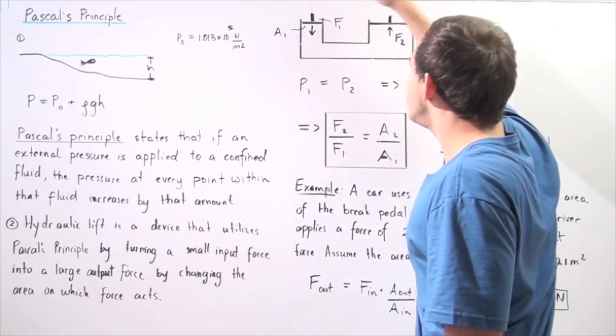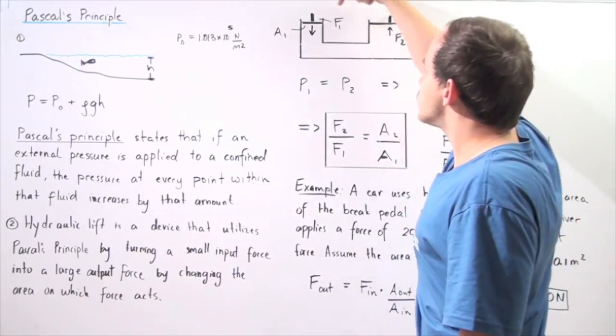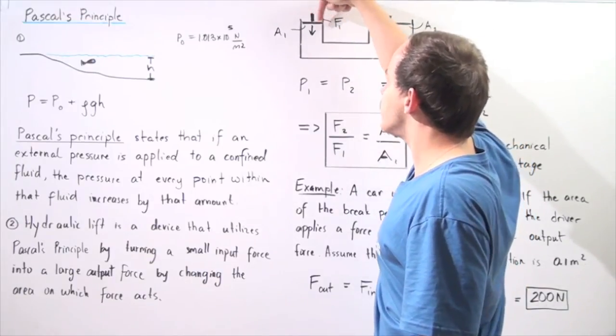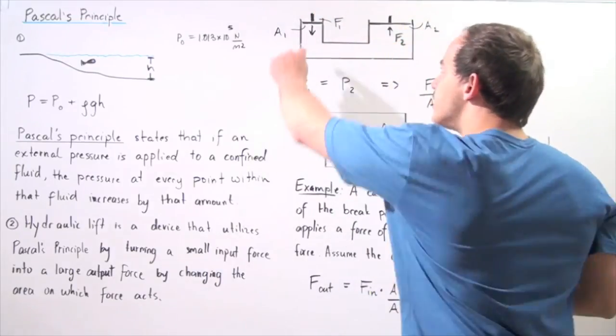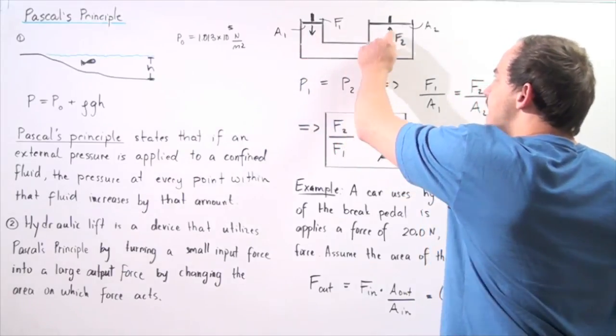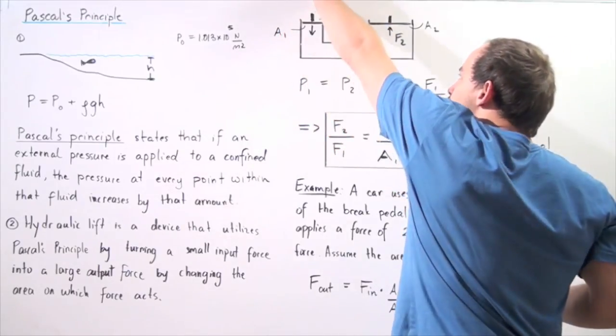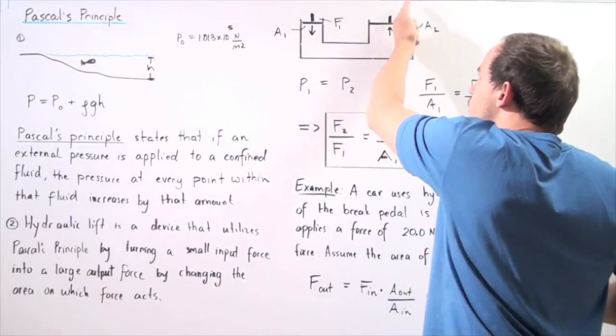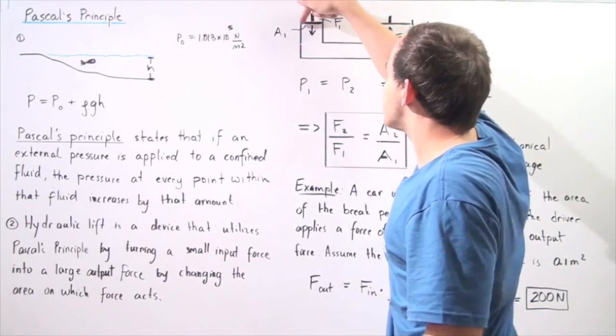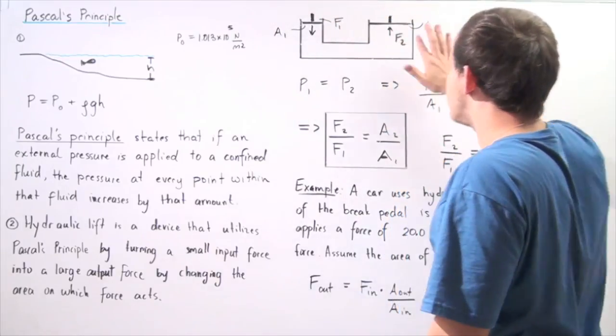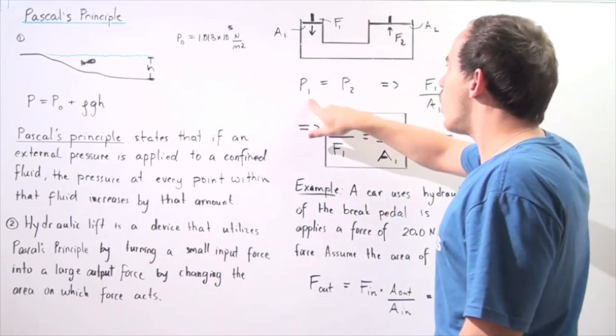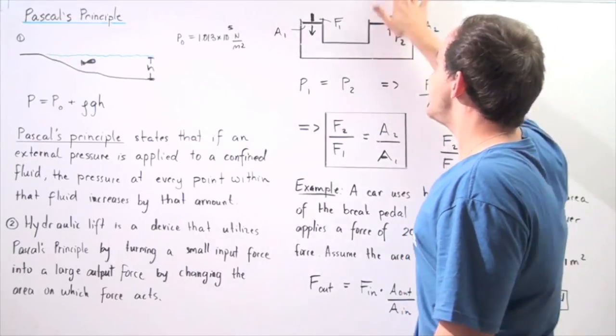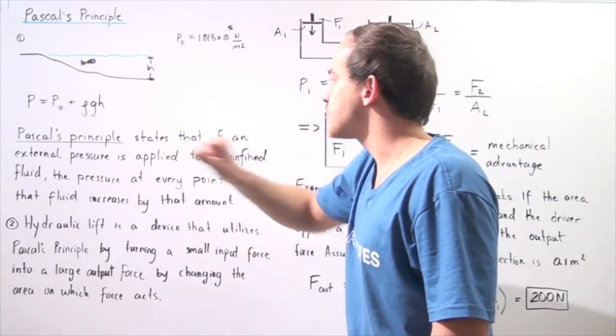This is our input, this is our output. We apply a pressure P1 to this area A1, and because this inside section is a fluid, the pressure will remain undiminished and go through the entire fluid. The pressure that this area feels is the same pressure that this area feels. P1 equals P2 because of Pascal's principle.